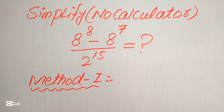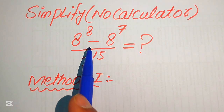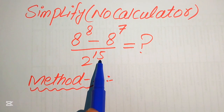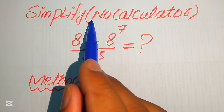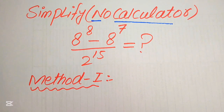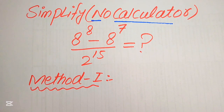Hello everyone. Today I want to show you how to simplify this algebraic expression into the simplified form. So if we have 8 to the power of 8 minus 8 to the power of 7 divided by 2 to the power of 50 — remember that the calculator is not allowed in this problem, so we need to show all of the working on paper. We will solve this using two methods, and if you have any other method in mind, please don't hesitate to write it in the comment section.